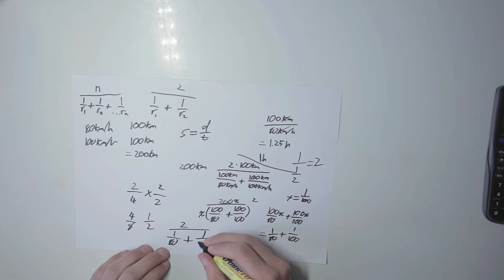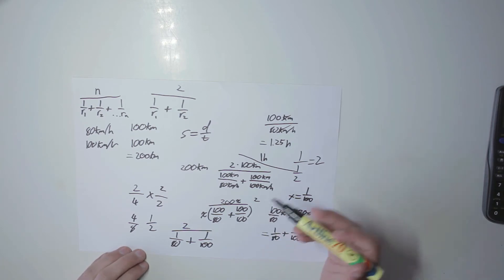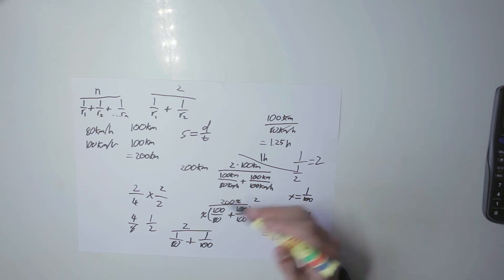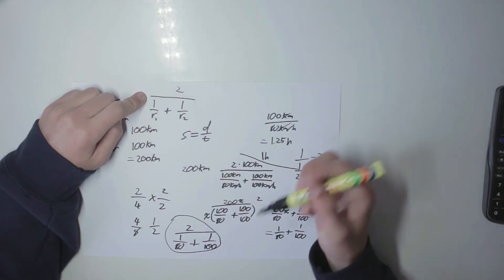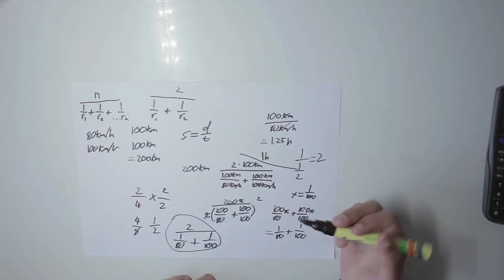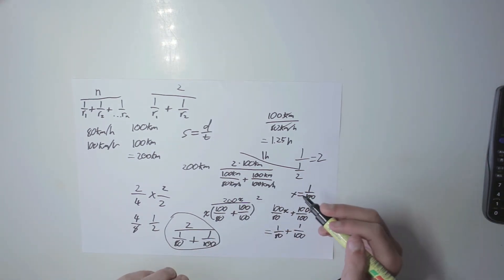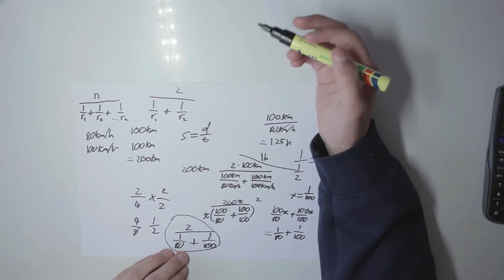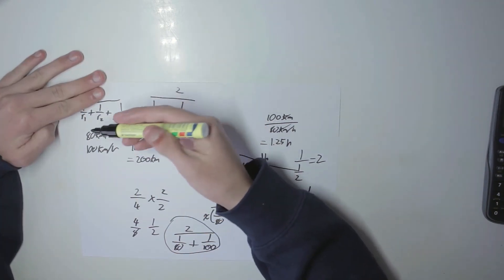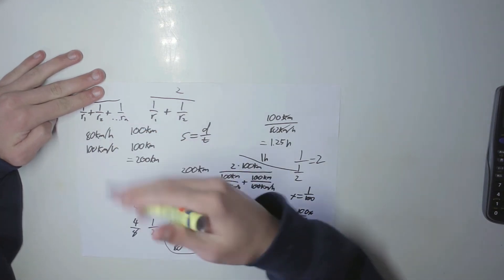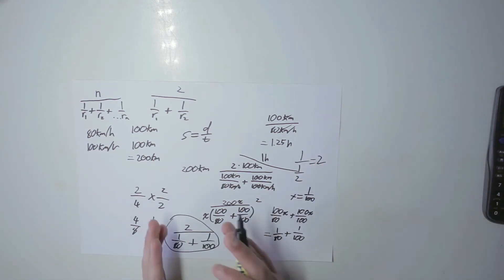After this manipulation we get 2 divided by (1/80 + 1/100), and the fraction is still the same because we've done to the denominator what we've done to the numerator. This looks exactly like the harmonic mean formula with 80 as the first rate and 100 as the second rate. We can generalize to n: the denominator is just calculating total time no matter how many different intervals you are traveling.